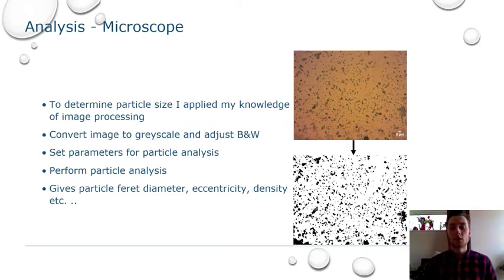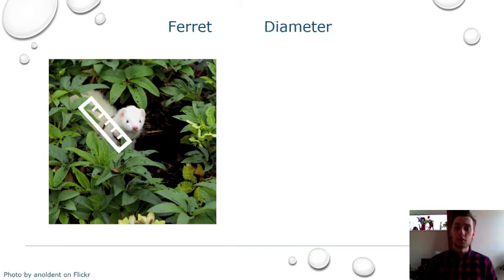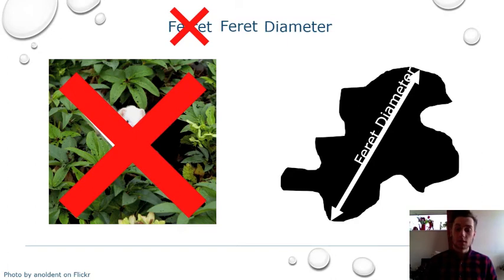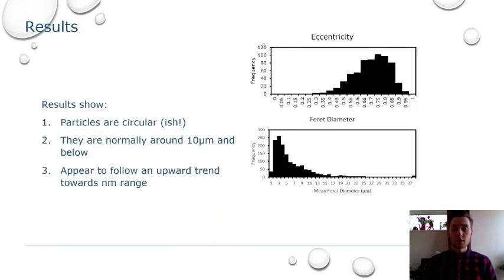I used my knowledge of image processing that I learned in second year and converted the image to grayscale, adjusted the black and white to get quite a high contrast. I then set parameters for a particle analysis where I looked for certain things where I thought there might be a trend, such as eccentricity, so how circular these particles are, the density, and the Feret diameter. This is not to be confused with the ferret diameter, which is used to determine the length of certain members of the weasel family. The Feret diameter is used to determine the diameter of a regularly shaped object, which finds the maximum diameter it can have. By doing this, I found some very interesting results. The first thing I found was that these smoke particles are circular-ish. They're not completely circular, but they do have an element of circularity about them.